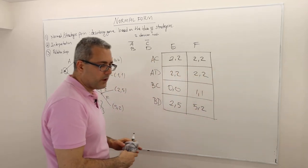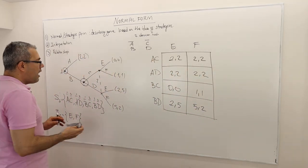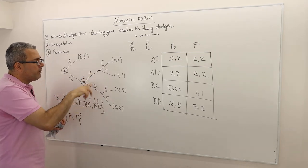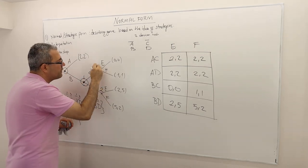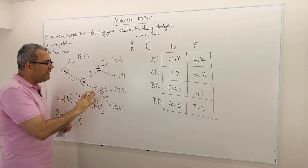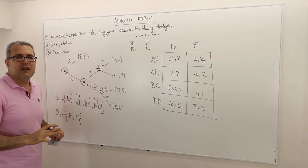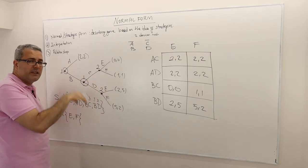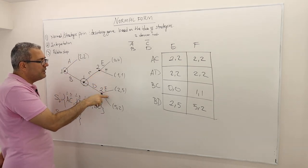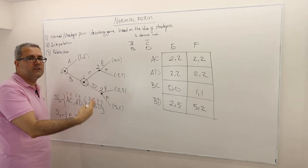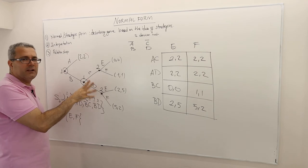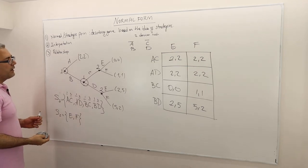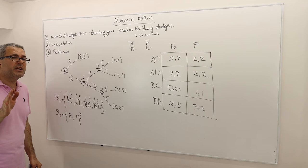Let's do one more example. I'm going to take the same game but break the information set for player two. Player two now has two separate decision nodes — not in the same info set. I'll leave the action names as E and F for now, even though in previous videos I recommended giving different names to actions at different decision nodes to avoid confusion.